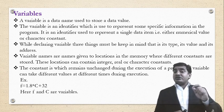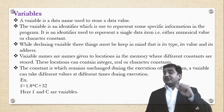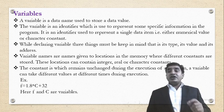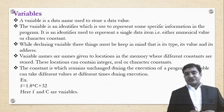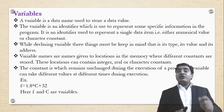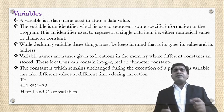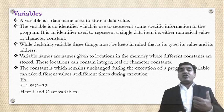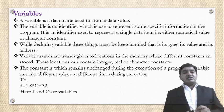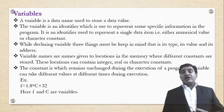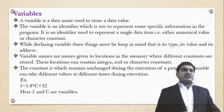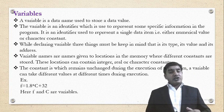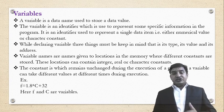While declaring a variable, three things must be kept in mind: its type (which may be integer, float, or character), its value, and its address. Variable names are names given to locations in memory where different constants are stored. A constant remains unchanged during execution of a program, while a variable can take different values at different times during execution.